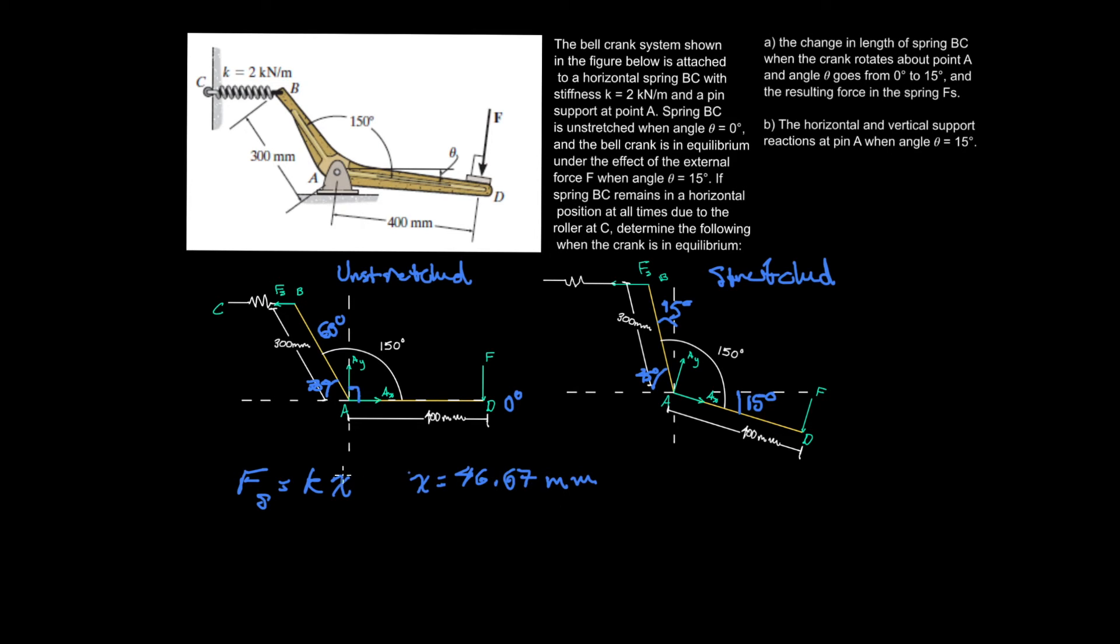Now, because when we do put in our x into here, it'll cancel with the 1000 on the top divided by 1000. And so what we're going to do then is have f of s equal to k, which is 2 times 46.67, which is equal to 95.35 newtons, as I pointed out, because those are going to cancel. And so I'm just going to clean up the board here a little bit. Okay, great.